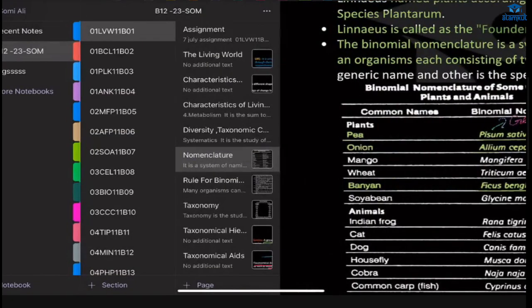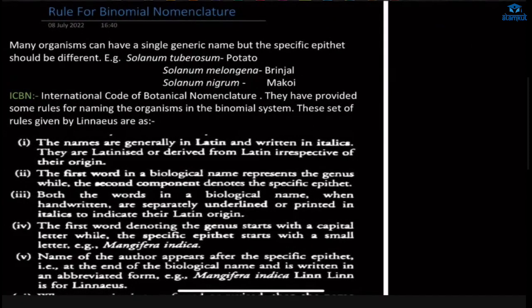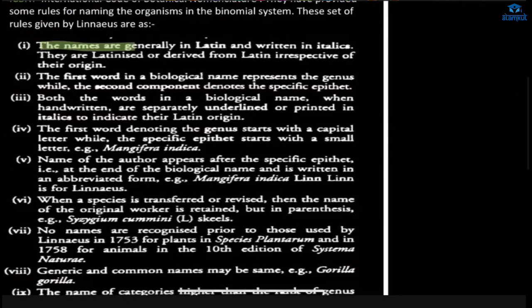What are the rules for binomial nomenclature? The rules are given by the International Code for Botanical Nomenclature. First rule: the names are generally in Latin and written in italics. They are latinized or derived from Latin irrespective of origin. Latin is used because it is a dead language — there is no change in it. The first word in a biological name represents the genus, while the second component denotes the specific epithet or species. For example, Rana tigrina — Rana is the genus and tigrina is the specific epithet.